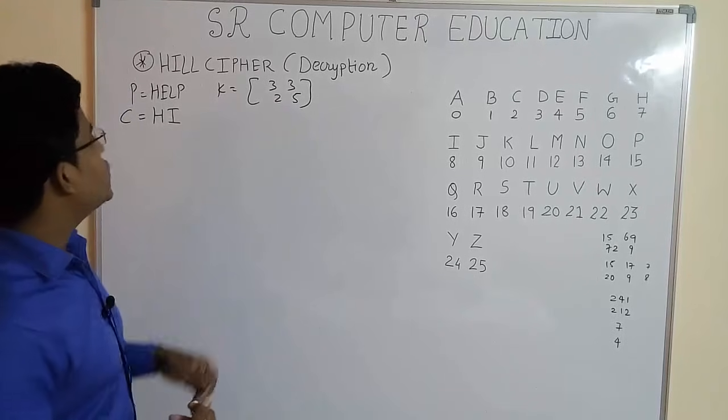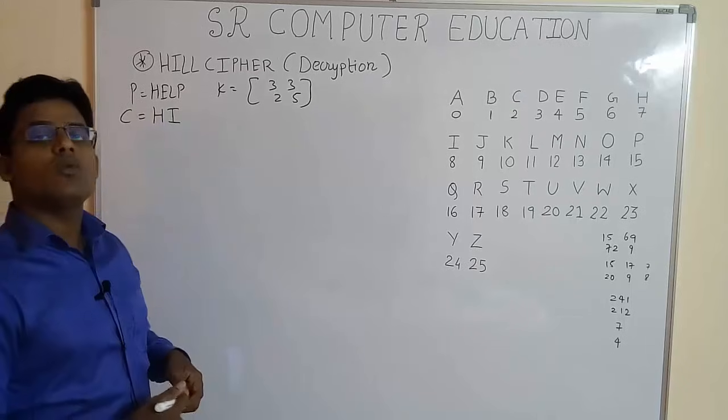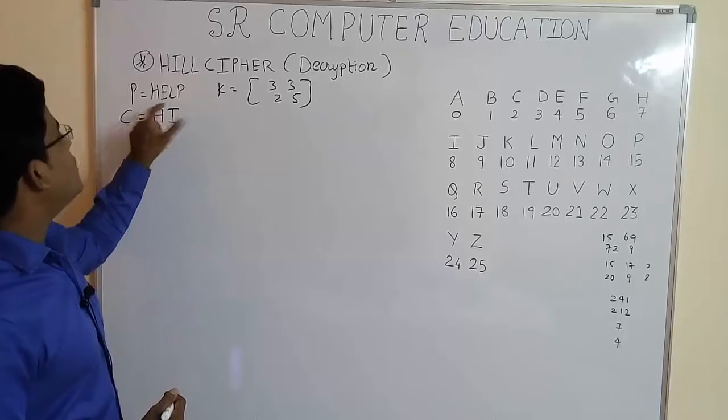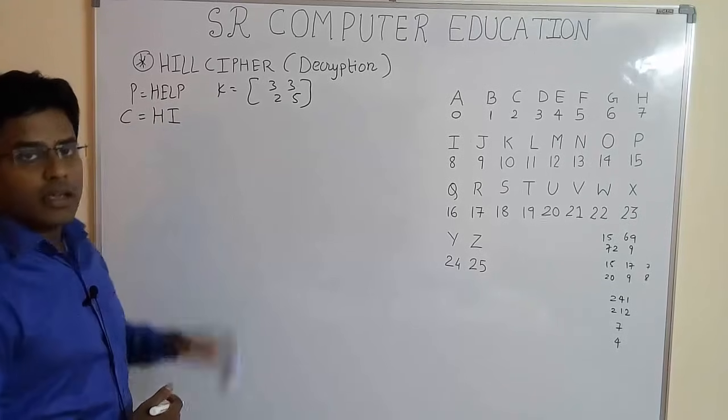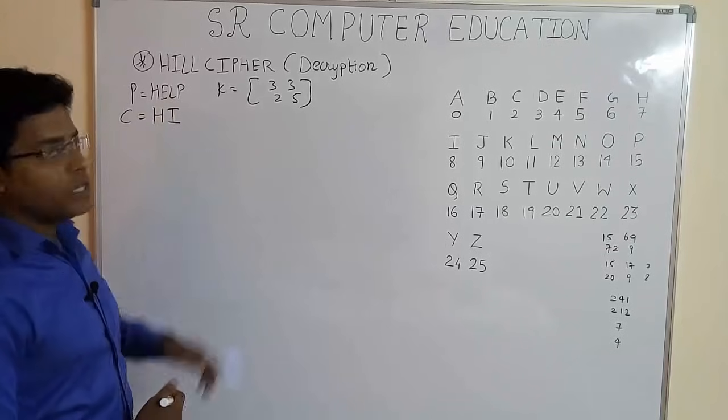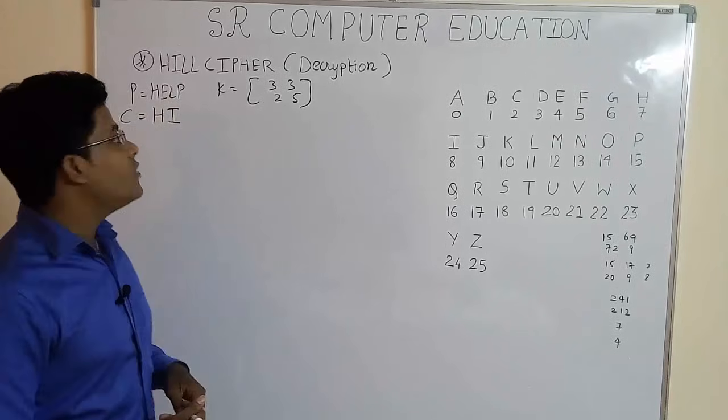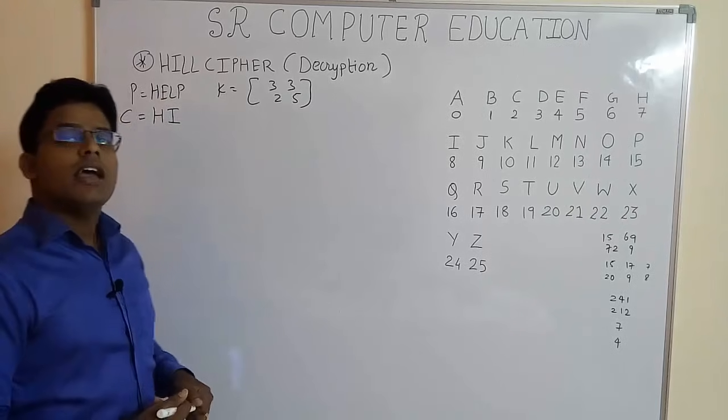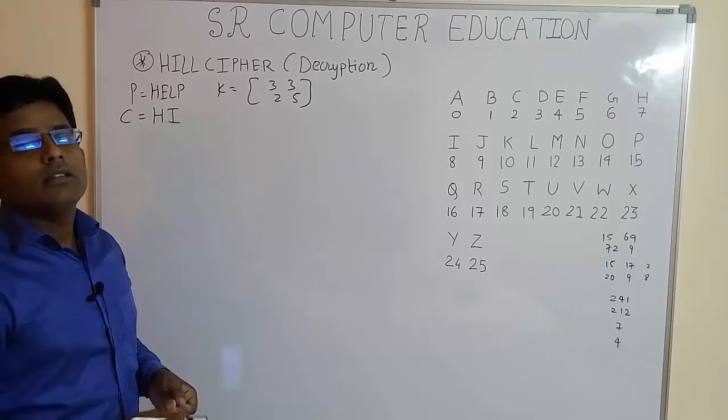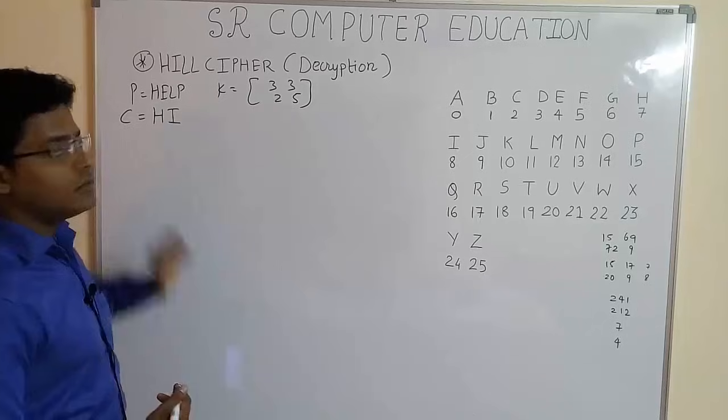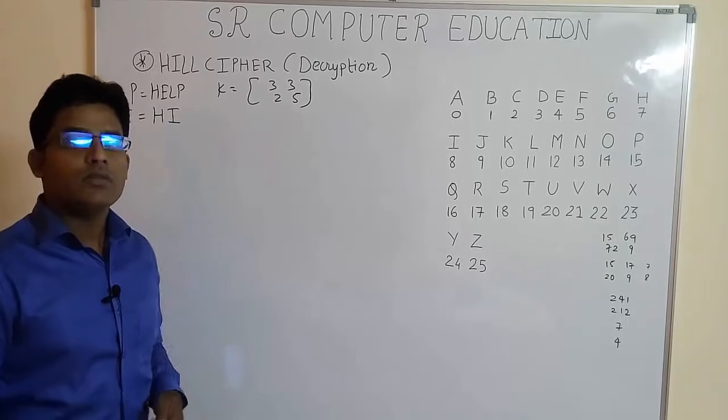In the previous video, we had seen that our plain text was HELP. So the cipher text for HE pair, we got HI. I hope you had also solved for LP and find the cipher text of LP. Now here the cipher text is HI and we want to get the plain text and obviously we would get HE, then only our answer would be right.